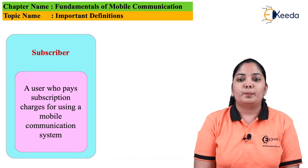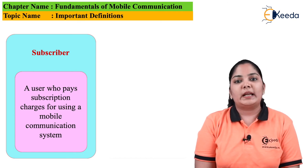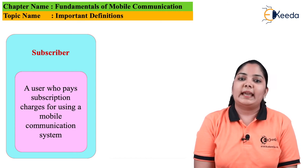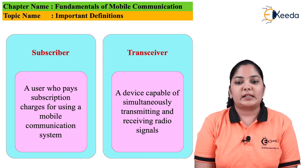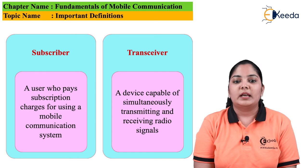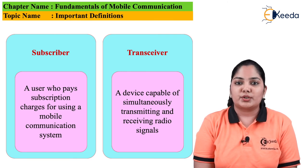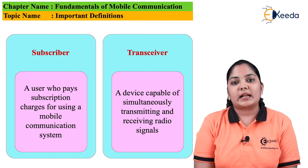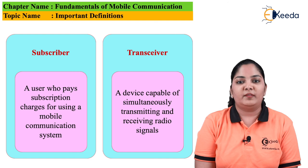Subscriber. A user who pays the subscription charges for using a mobile communication system is known as a subscriber. We all use mobile communication systems and hence we all become subscribers. Trans-receiver. A device capable of simultaneously transmitting and receiving radio signals is known as a transceiver — a combination of transmitter and receiver, available in both the base station and in mobile phones.